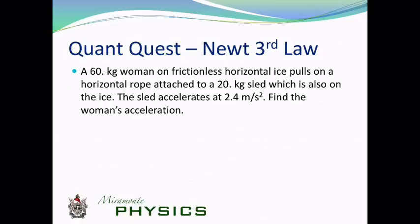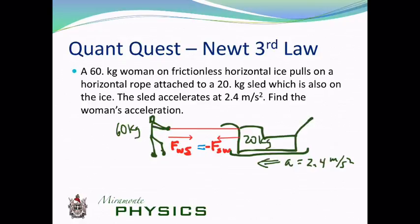Okay, so we always start by drawing a little picture. So here we go, I'm going to draw it really fast. And boom, there it is. So we got everything labeled, I got the woman, and she's pulling on the sled with a horizontal rope. She's 60 kilograms, the sled is 20 kilograms. And I do a little diagram that says the force of the woman on the sled is equal to the force of the sled on the woman. Equal and opposite.